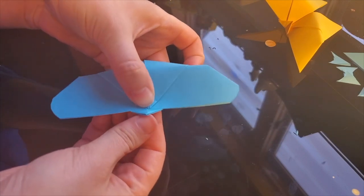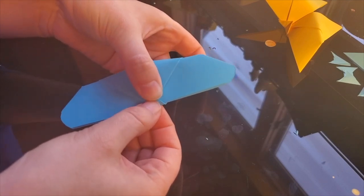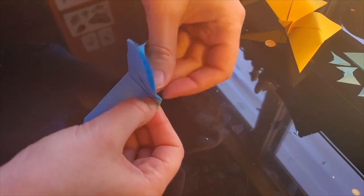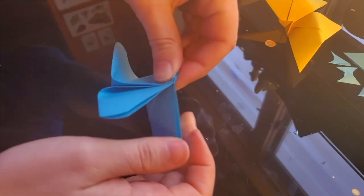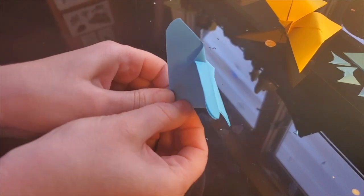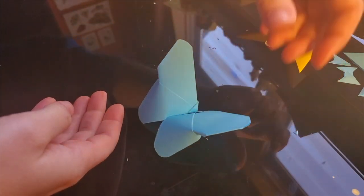Fold the tab over the top. Fold the butterfly in half, pinching the tab and the creases so that everything stays in place. And with that, you've finished your first butterfly.